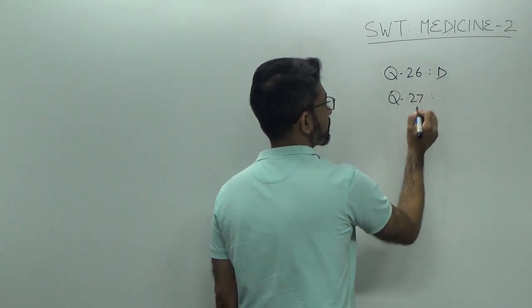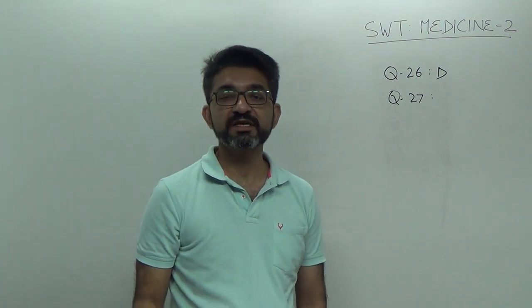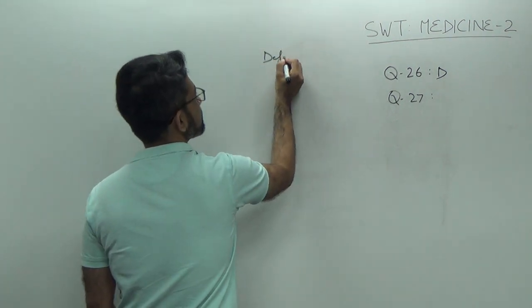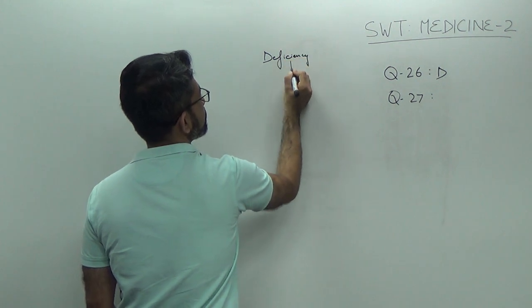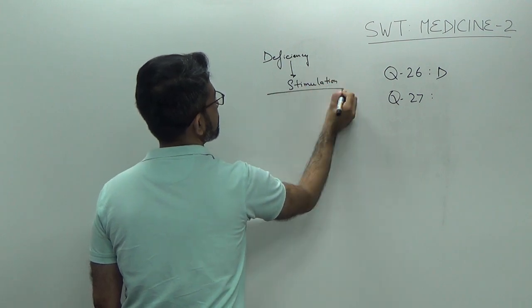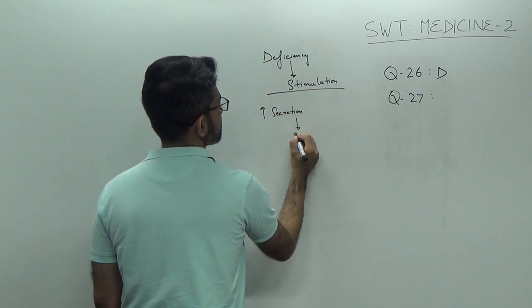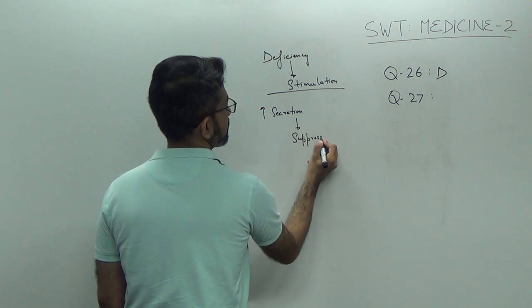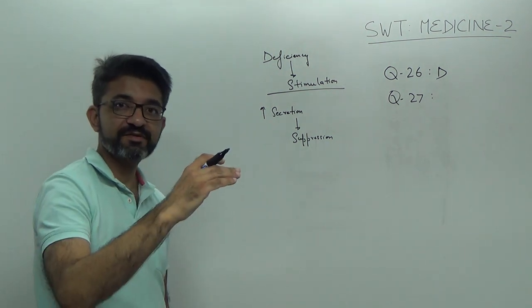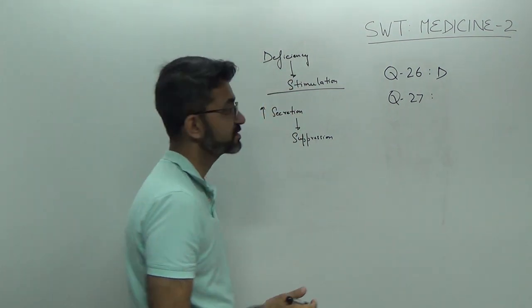Question number 27. In Addison's disease, the most diagnostic test is ACTH stimulation. See, in deficiencies, we do stimulation. Remember, in deficiency, you do stimulation test. When there is increased secretion, we do suppression test. So, if you have a patient of Addison's disease, you have low cortisol levels. So, it is deficiency, you stimulate it by giving an ACTH stimulation test. So, the answer is D.